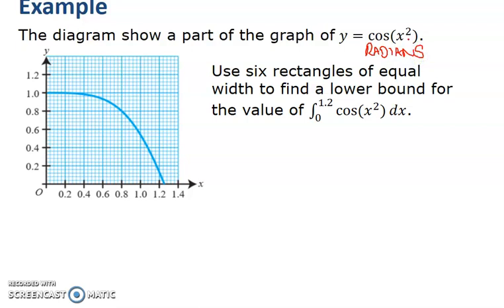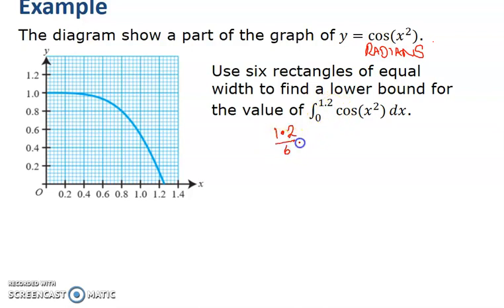It says use six rectangles between 0 and 1.2, so one, two, three, four, five, six — you can see each rectangle will have a width of 0.2, because 1.2 divided by six rectangles gives 0.2. I'm going to draw rectangles under the curve. It says to find a lower bound, so I'm going to draw a rectangle, seeing where it hits the curve, then going across and down at that point to make a rectangle.